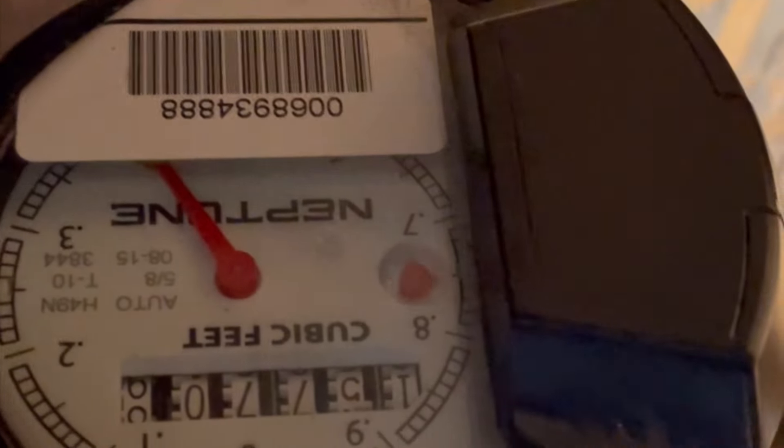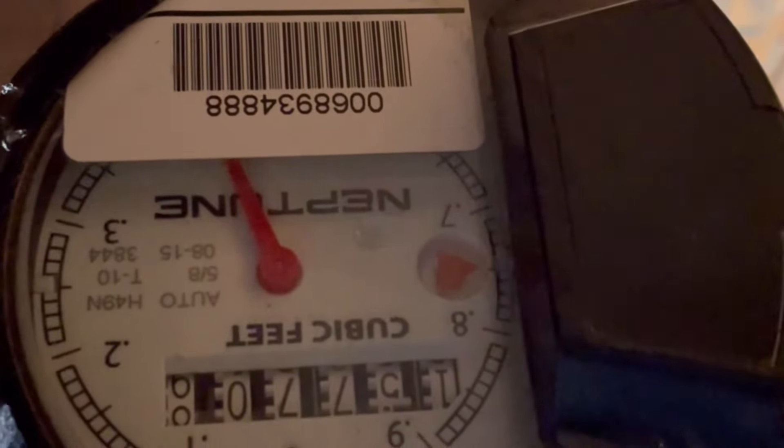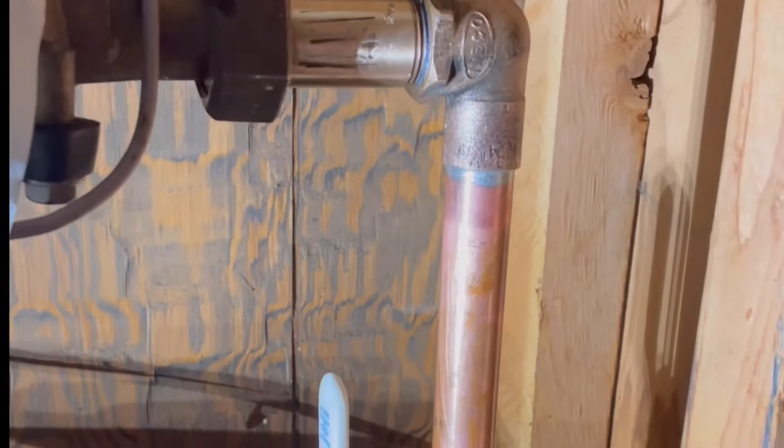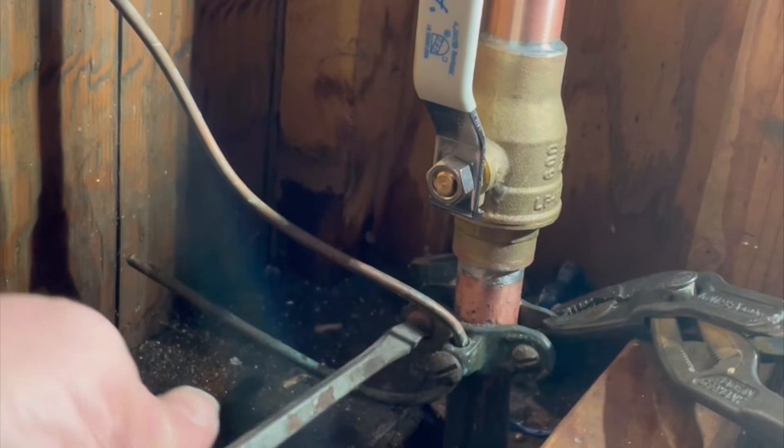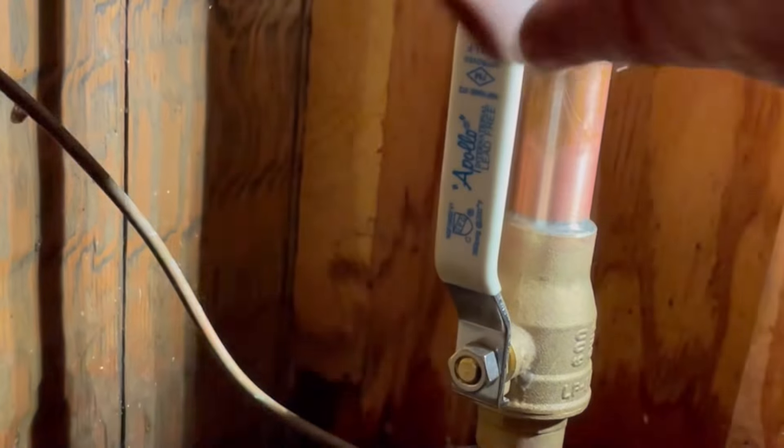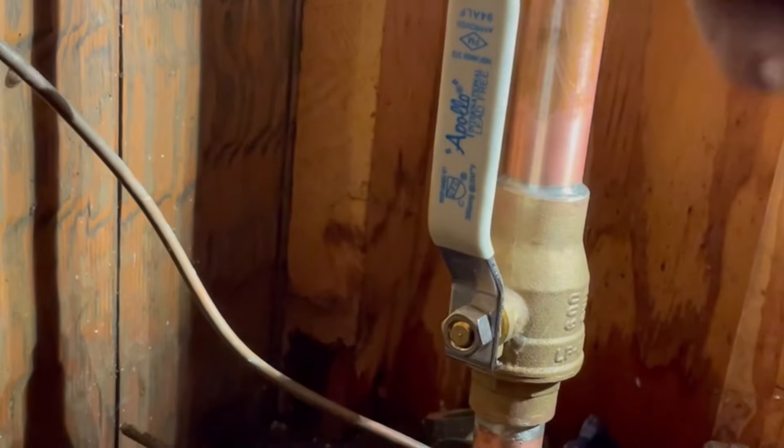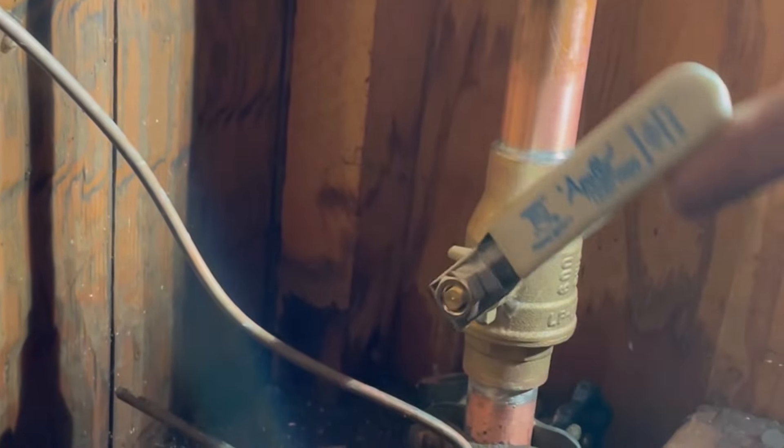Here I'm checking the meter just to make sure it's not spinning, make sure there's no leaks, and looking over everything. Lastly, I'm going to tighten up those bonding clamps and make the property manager aware of the situation, maybe have an electrician check it out. But here's the overall job, it went pretty smooth, they have a new ball valve, and I think it turned out pretty good.